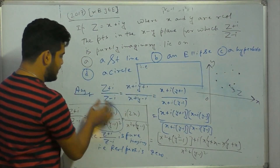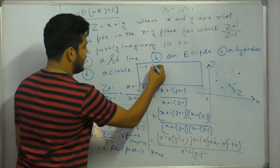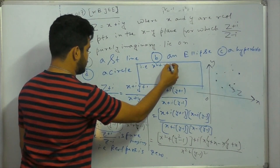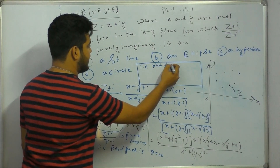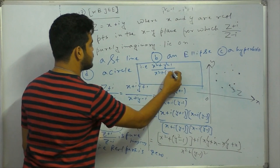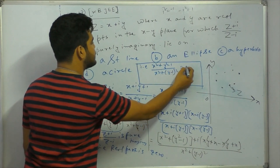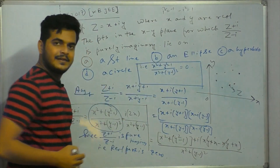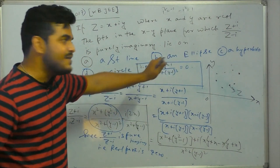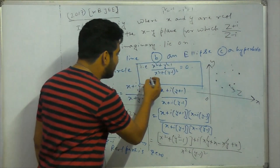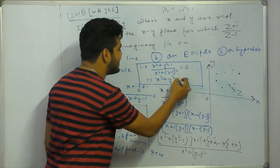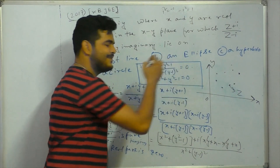The real part is x squared plus y minus y squared minus 1 equals 0. x squared plus y minus 1 equals 0. This means x squared plus y squared minus 1 equals 0.